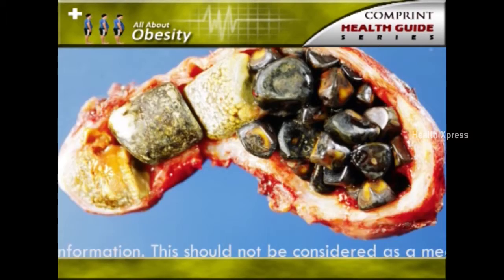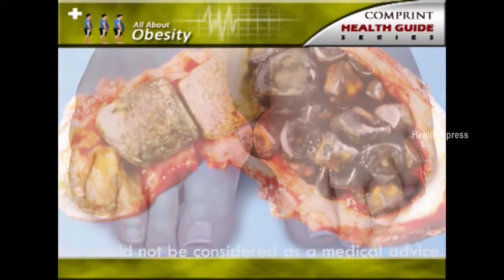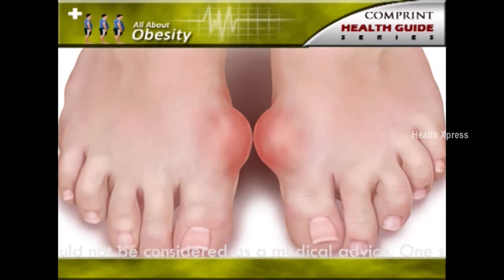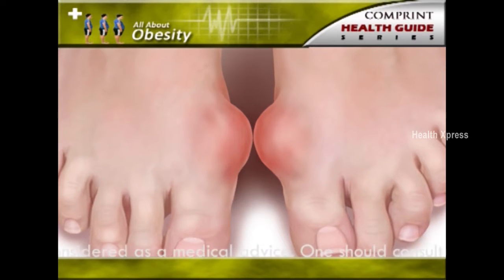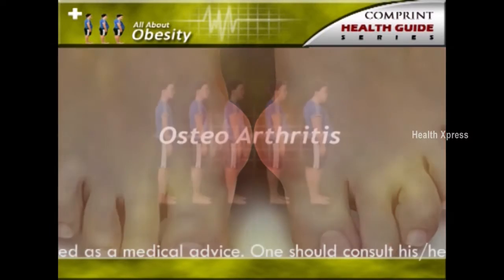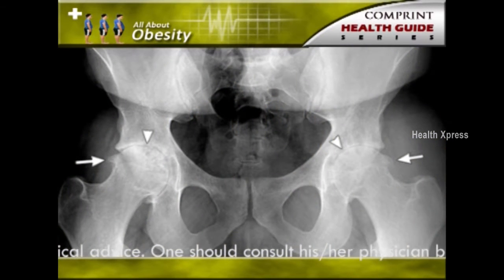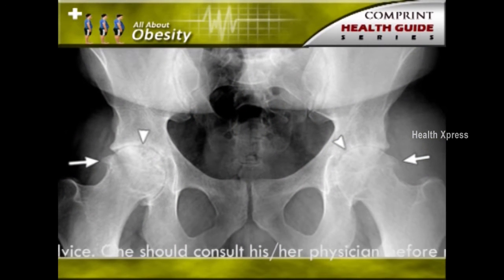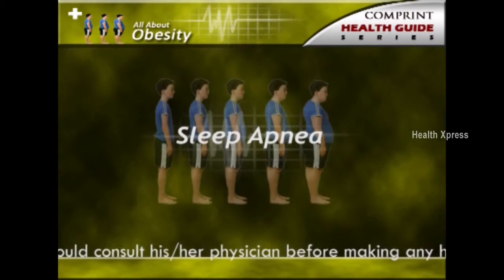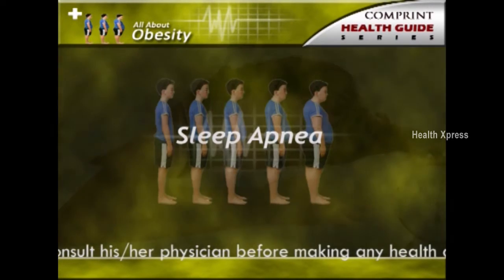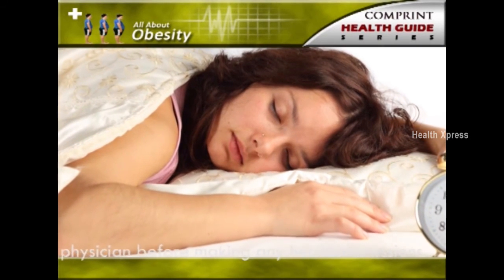Gallstones may also develop due to obesity. Gout and gouty arthritis: in some cases, these conditions arise due to obesity. Osteoarthritis: degenerative arthritis of the knees, hips, and lower back are other complications of obesity. Sleep apnea may also occur due to obesity.